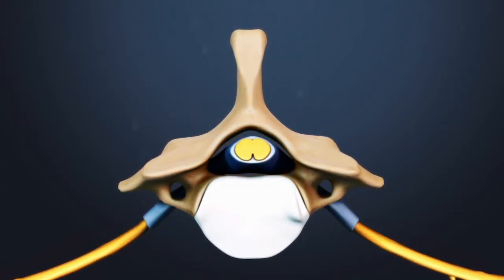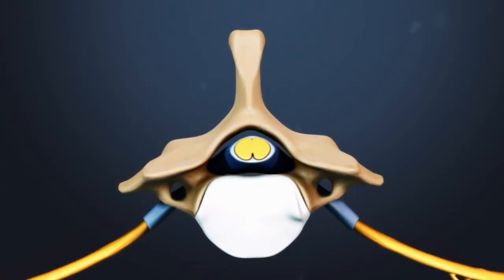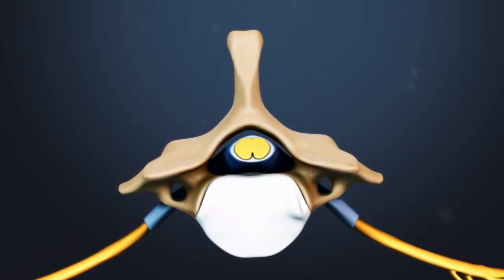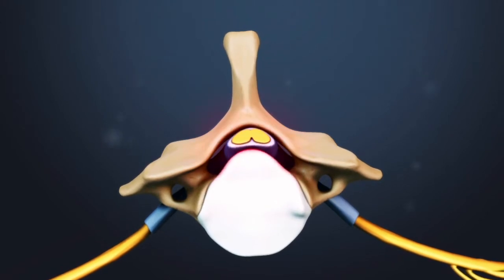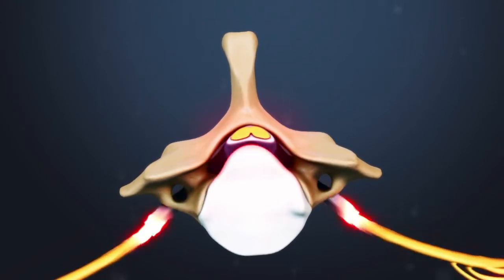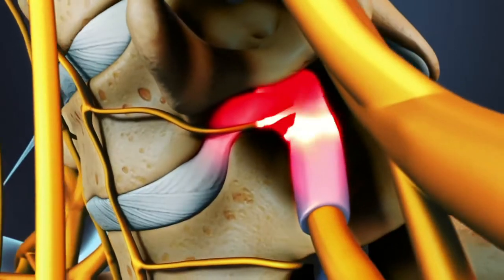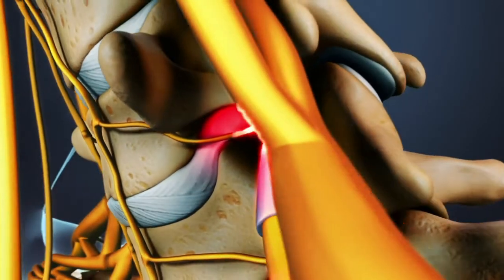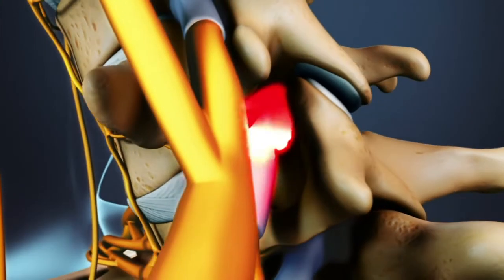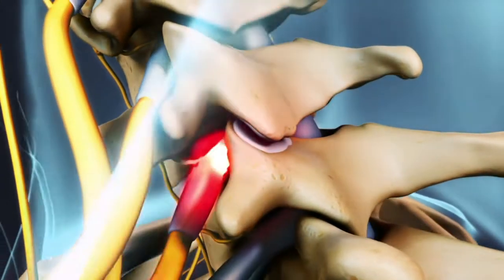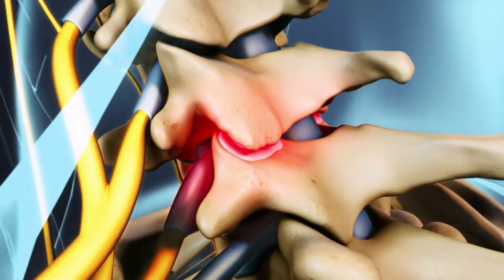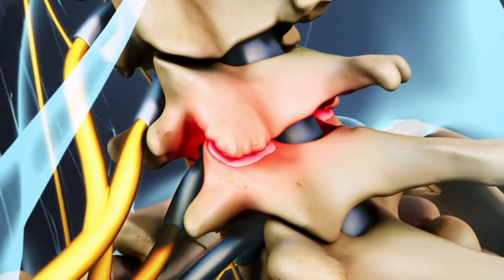One or more herniated cervical discs may also contribute to spinal compression if they herniate into the spinal canal. Herniated discs may further impinge on nerve roots that already have some foraminal compression from osteoarthritis.